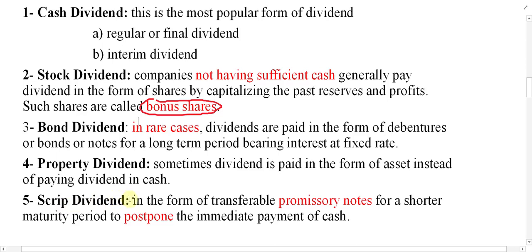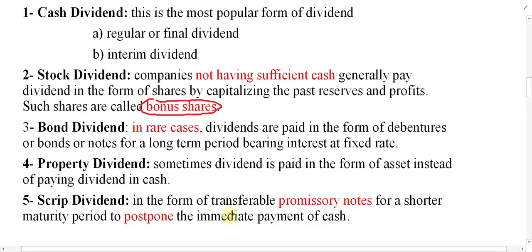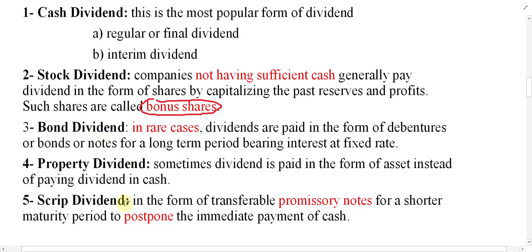Finally, there is scrip dividend. A scrip is a transferable promissory note issued by the company for a shorter maturity period to postpone the immediate payment of cash. For example, the company may postpone payments for three, four, or five months. The company is not willing to issue shares or bonds, but expects to receive cash after two or three months. Until then, the company can postpone the dividend by issuing this promissory note.